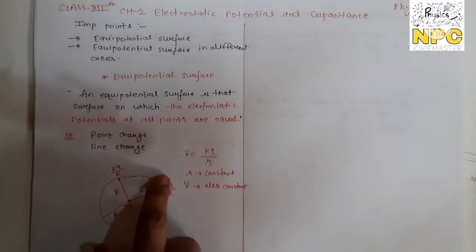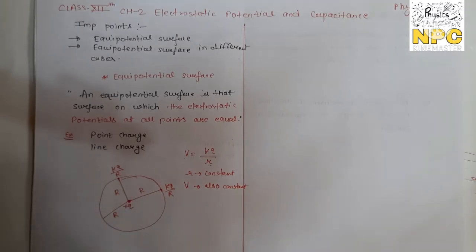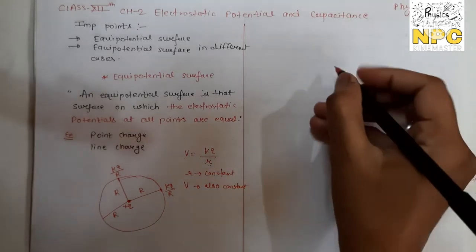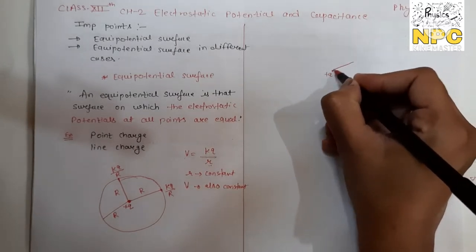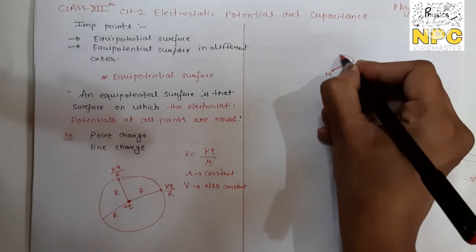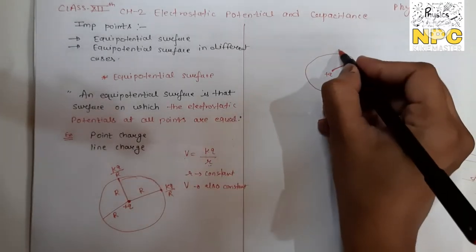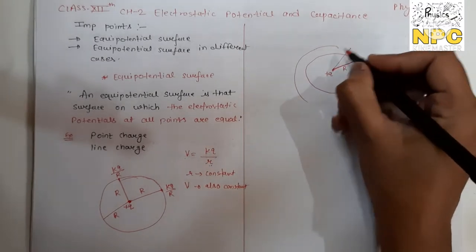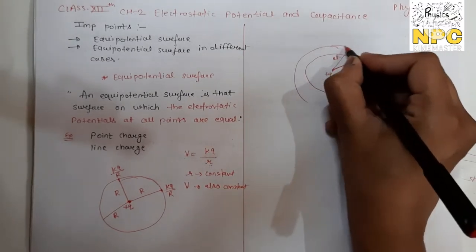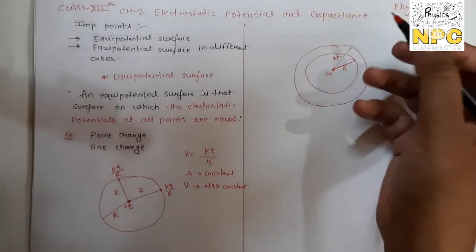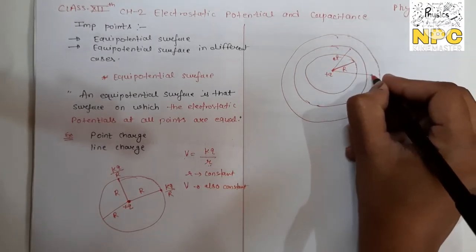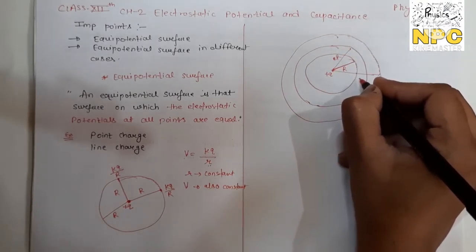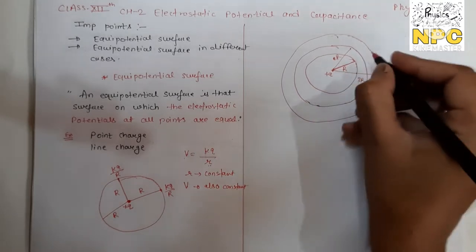For this radius R, the equipotential surface is one sphere. But for different radii, you can draw concentric spheres. If you take a positive charge and draw a sphere at distance R, then at 2R draw another sphere, and at 3R draw yet another, you get concentric equipotential surfaces.